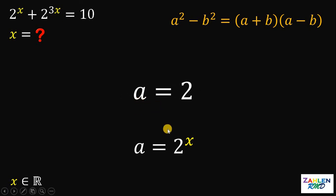Since a is equal to 2 and it is also equal to 2 raised to x, we can say that 2 raised to x must be equal to 2. Take note that 2 can be written as 2 raised to 1.